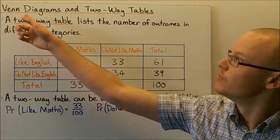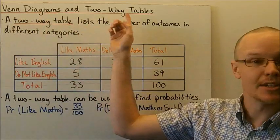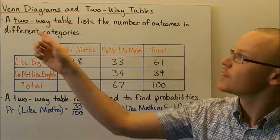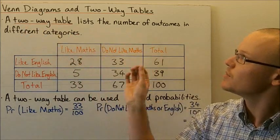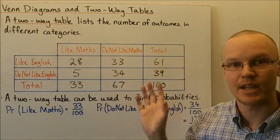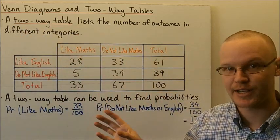Today we're going to look at Venn diagrams and two-way tables. A two-way table lists the number of outcomes in different categories.